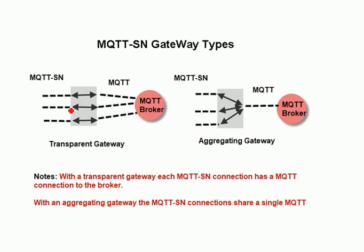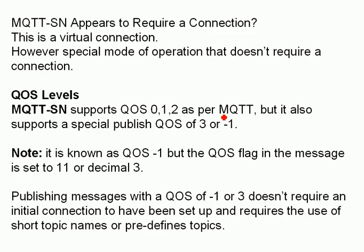The schematic illustrates this: we see multiple MQTT-SN connections and multiple MQTT connections on the other side of a transparent gateway. For an aggregating gateway, there's only one connection regardless of the number of connections on the sensor side.